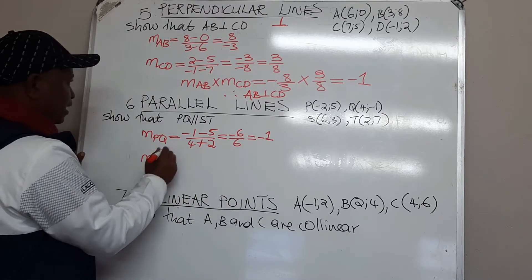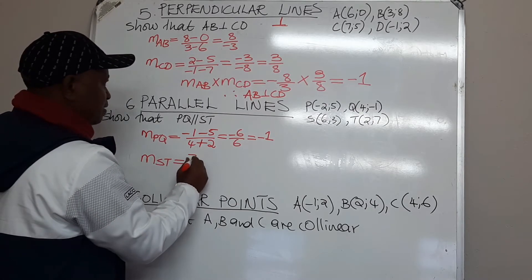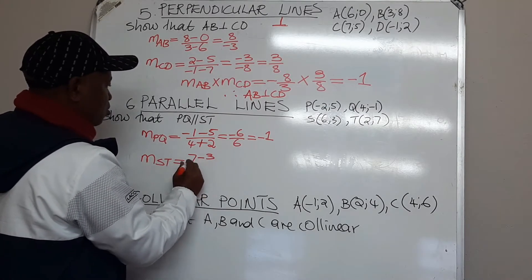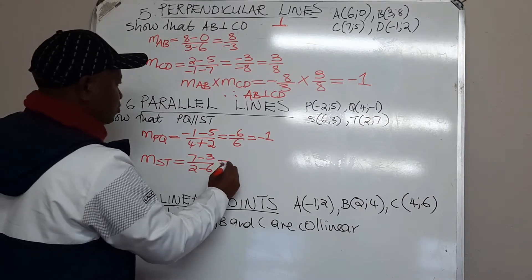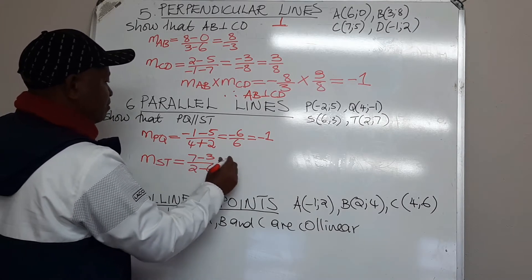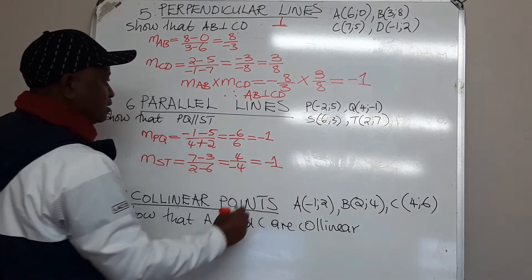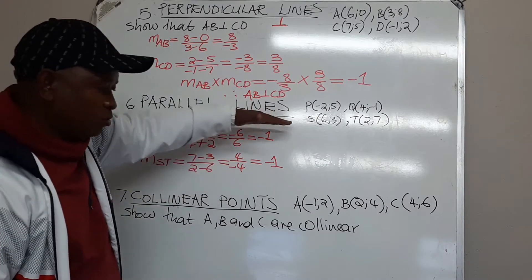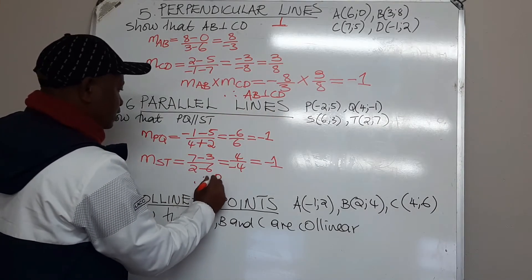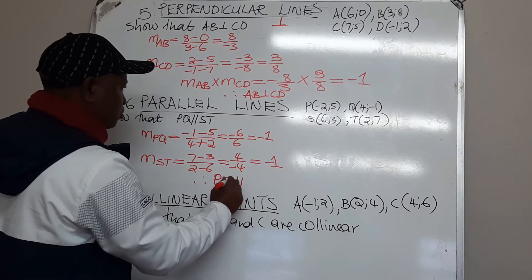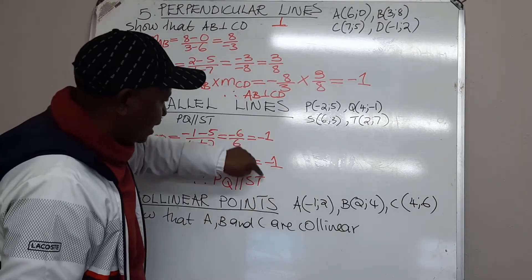We must also find the gradient of ST, which is 7 minus 3 over 2 minus 6. This gives us 4 over negative 4, and the answer is negative 1. Once the gradients are equal, we conclude that the two lines are parallel — PQ is parallel to ST. If they are not equal, the two lines are not parallel.